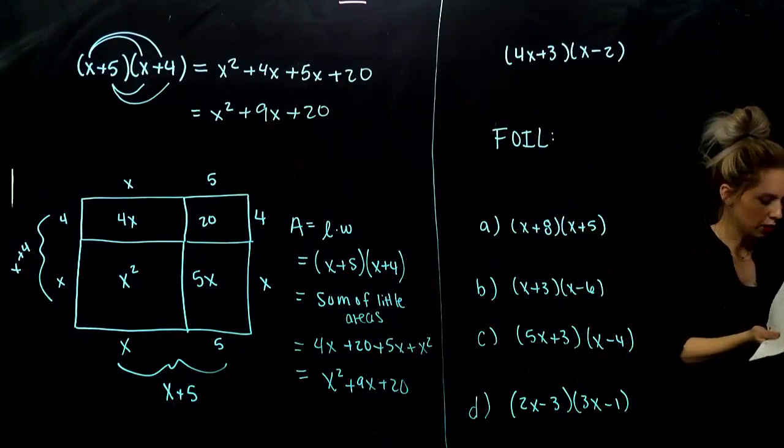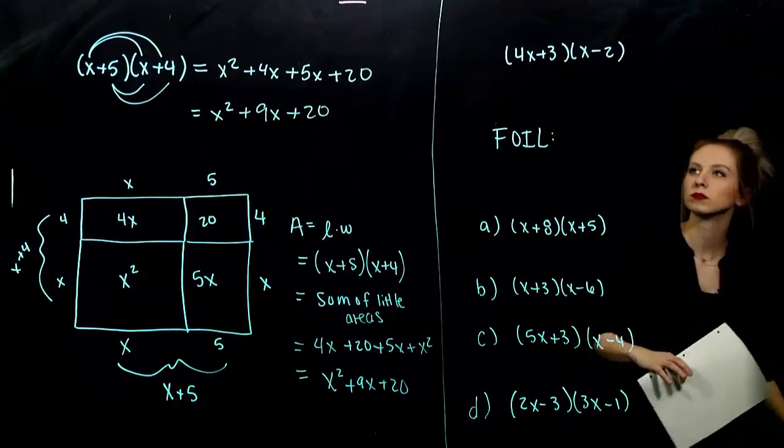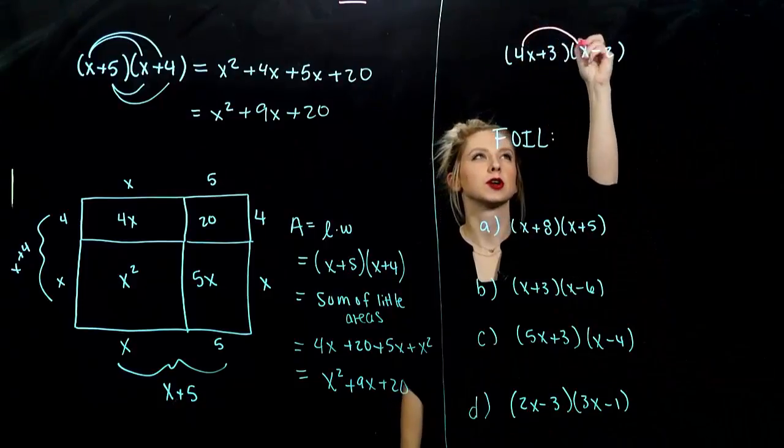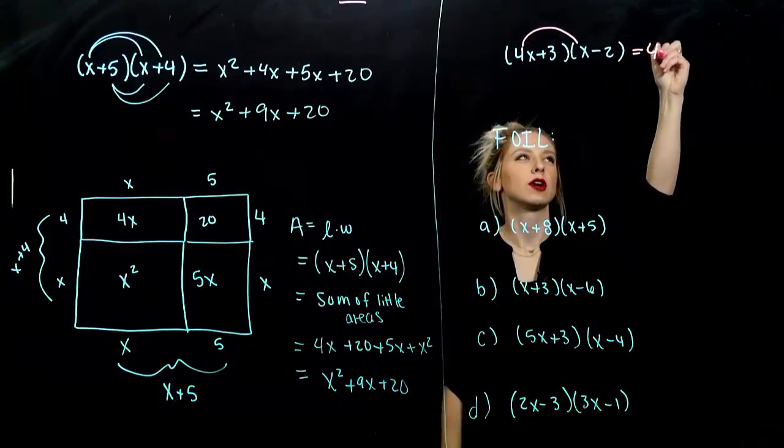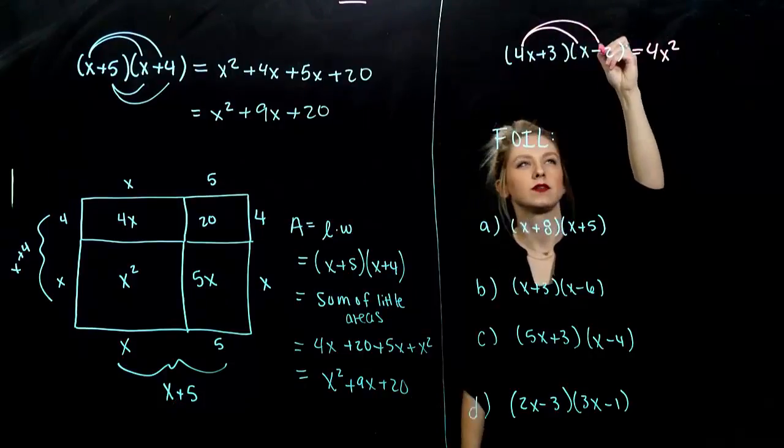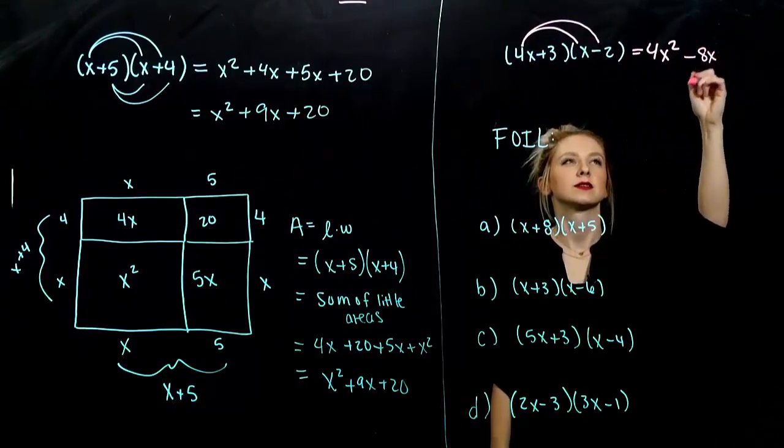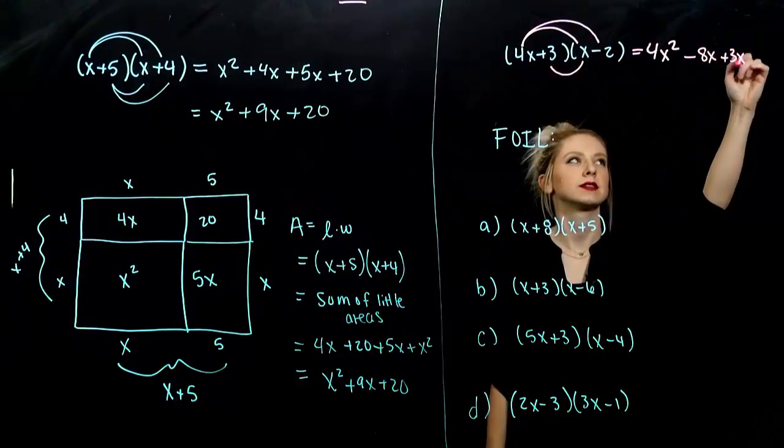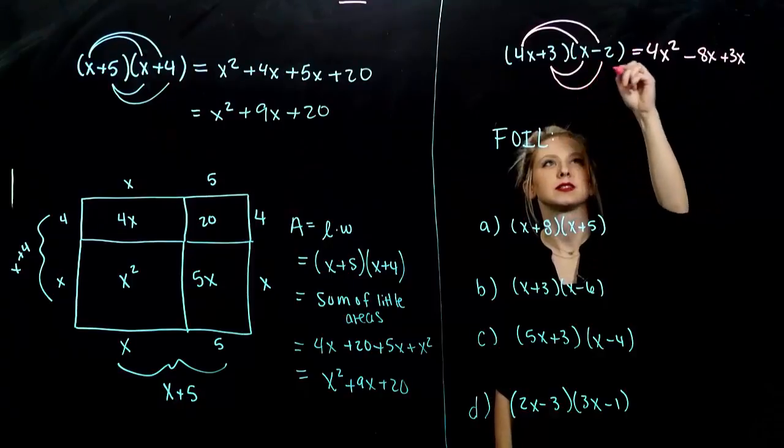And, we want to multiply these two binomials. So, again, first term, I get 4x squared. 4x times negative 2 is going to give me negative 8x. The inner ones together will give me plus 3x. And then, the last, 3 times negative 2, will give me negative 6.